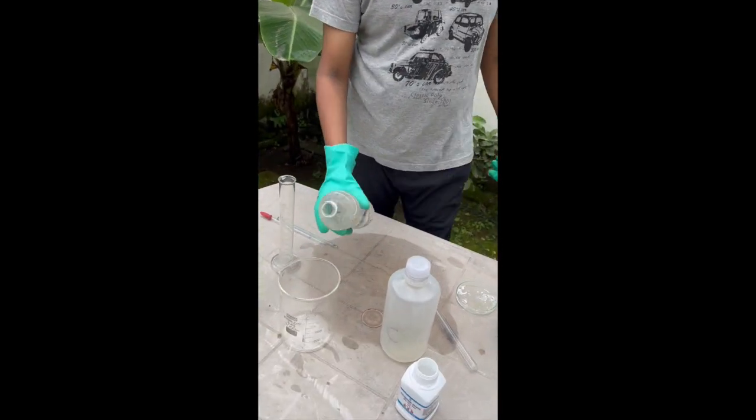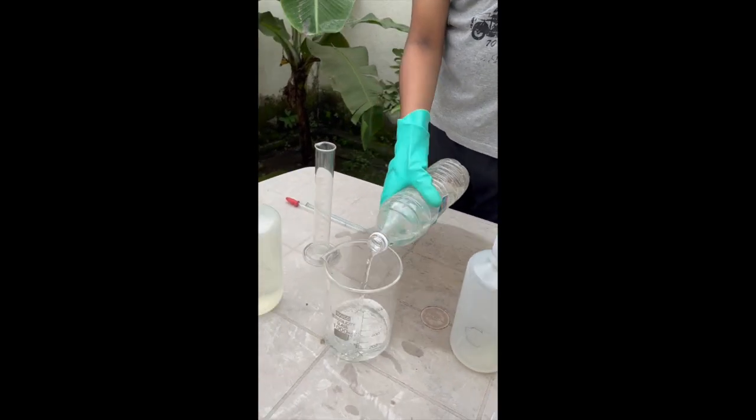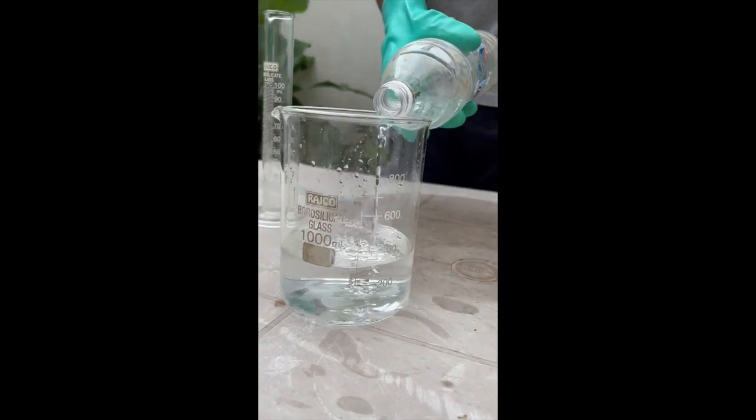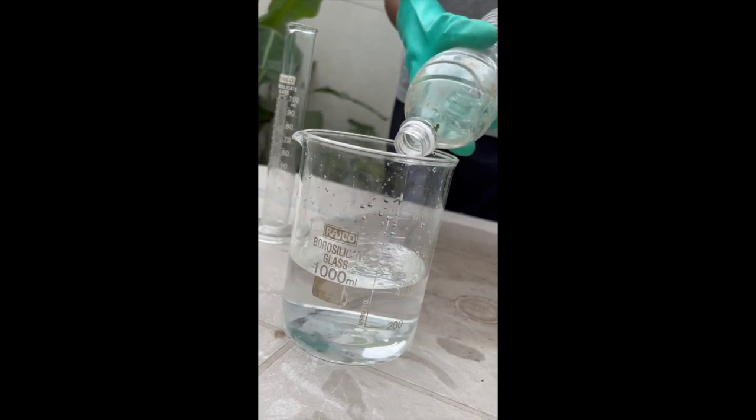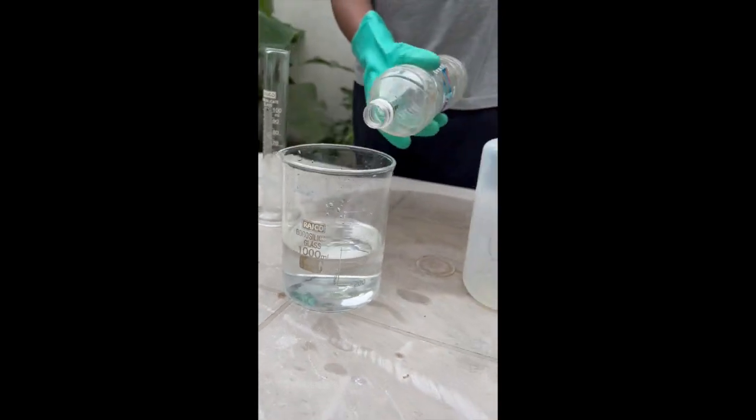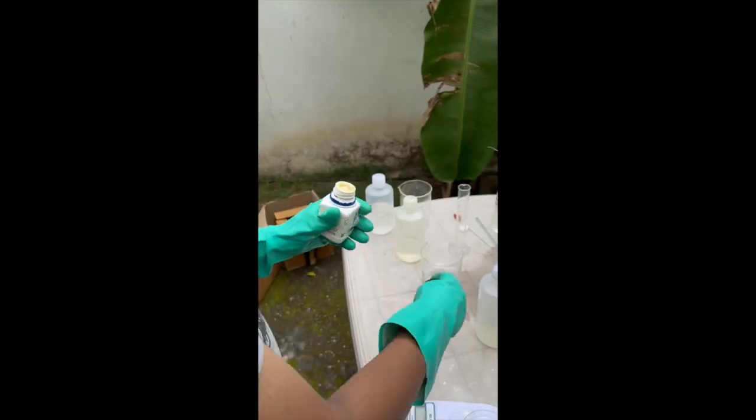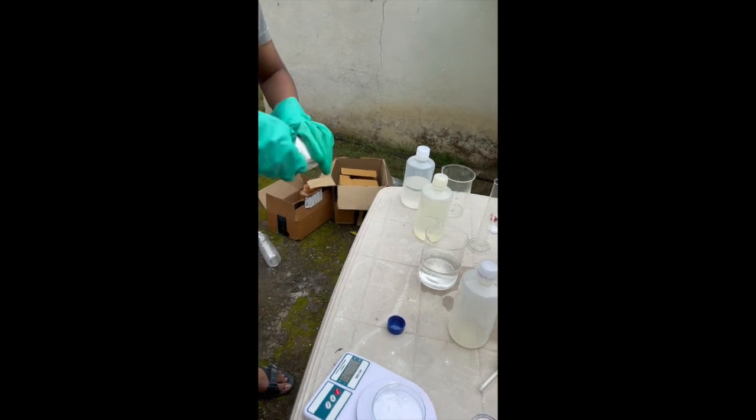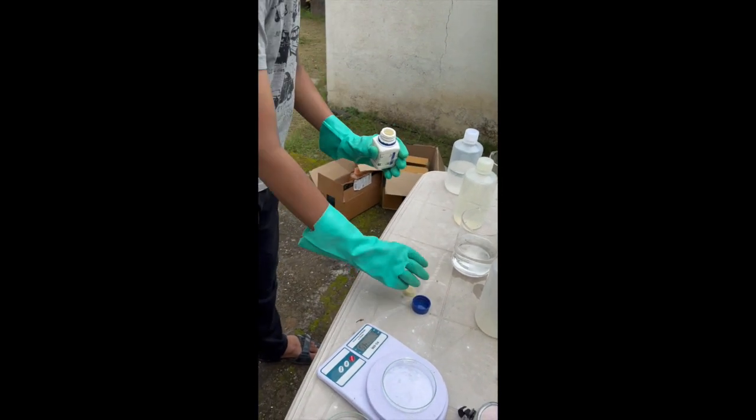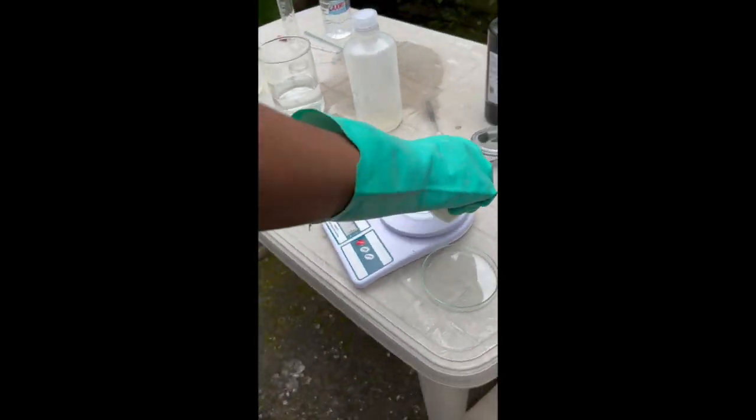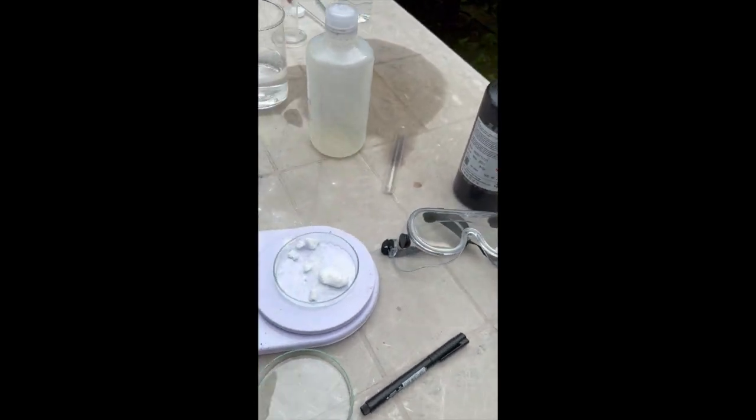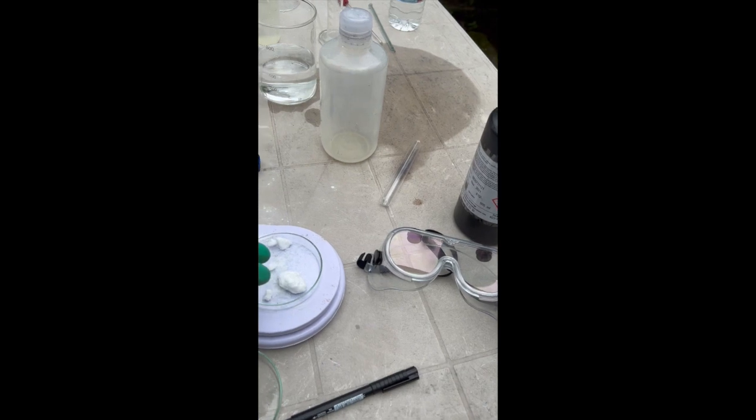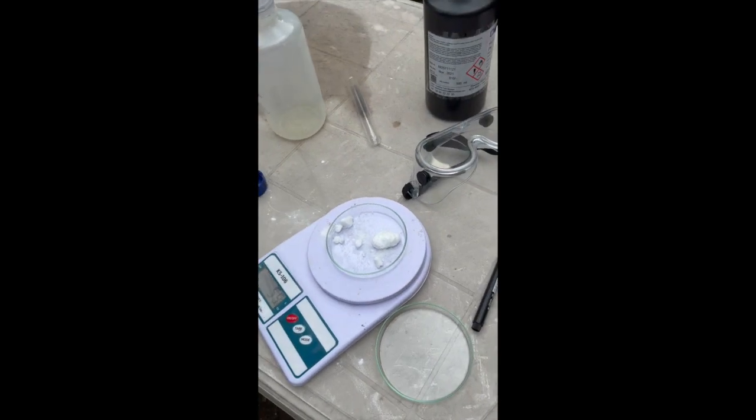Solution C will take us the most time. To another beaker, I add about 450 ml of distilled water. Now, I add about 8 grams of malonic acid. For this, I will have to measure it first and I am doing this on a petri dish on a weighing scale, which may be very inaccurate, but it's fine for this reaction.